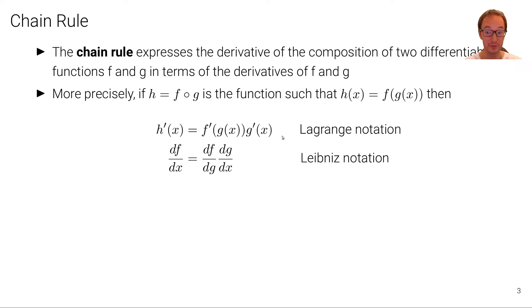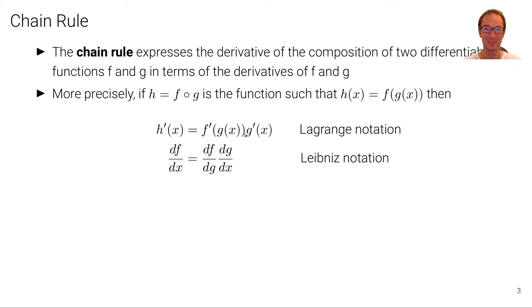The chain rule tells us the following, in both notations. The first is called Lagrange notation and the second is called Leibniz notation. The chain rule tells us that the derivative of the composed function with respect to x is the outer derivative — the derivative of f with respect to its argument — times the inner derivative, which is the argument with respect to x. Similarly: df with respect to dg, times dg with respect to dx.